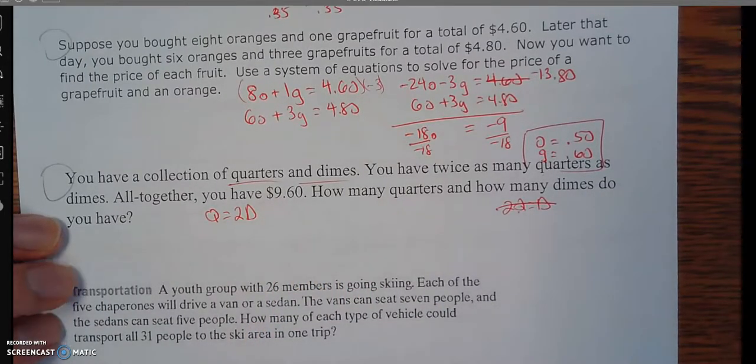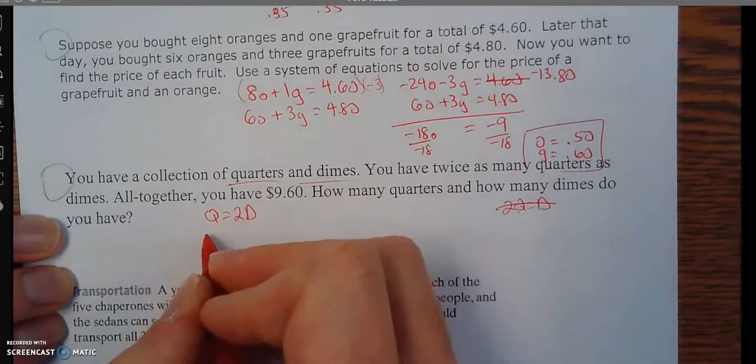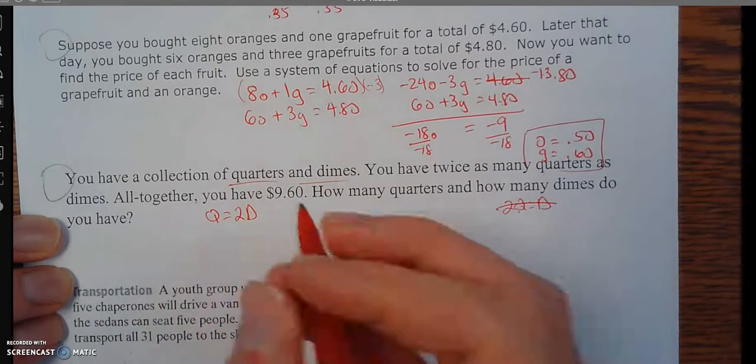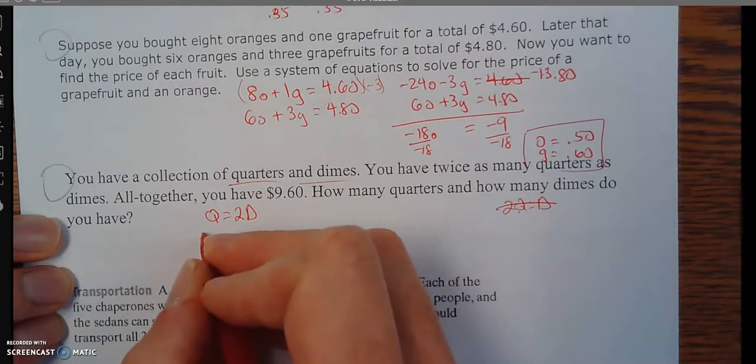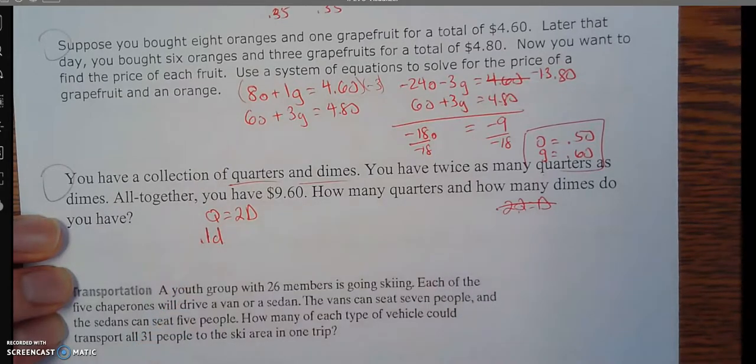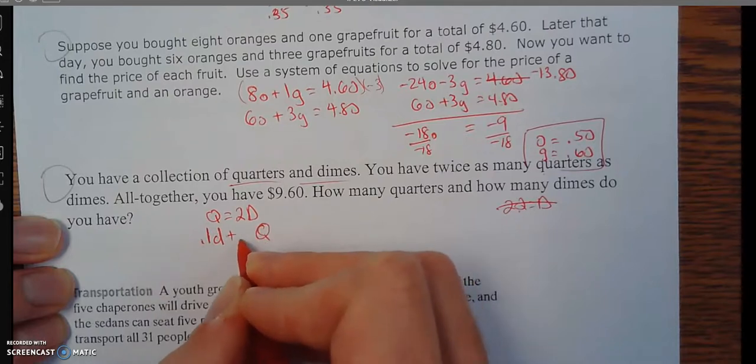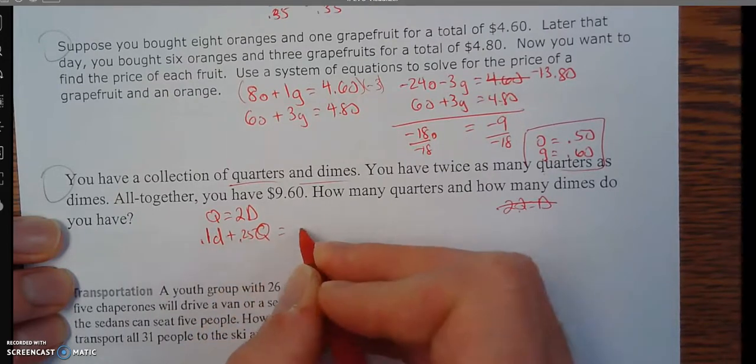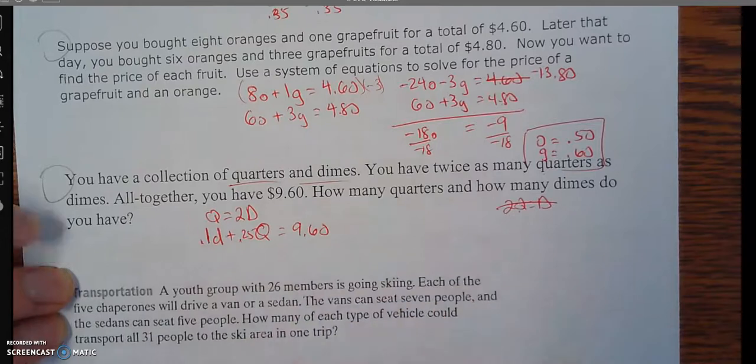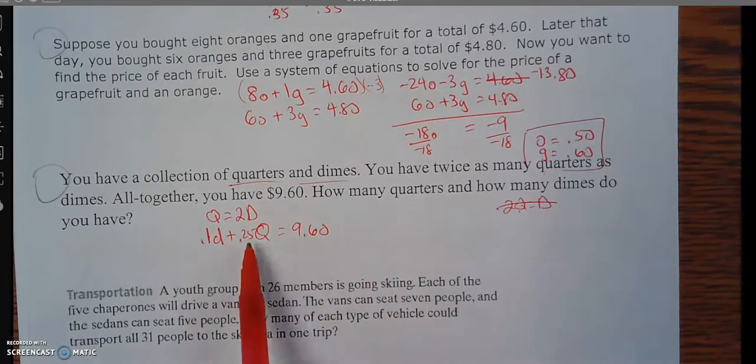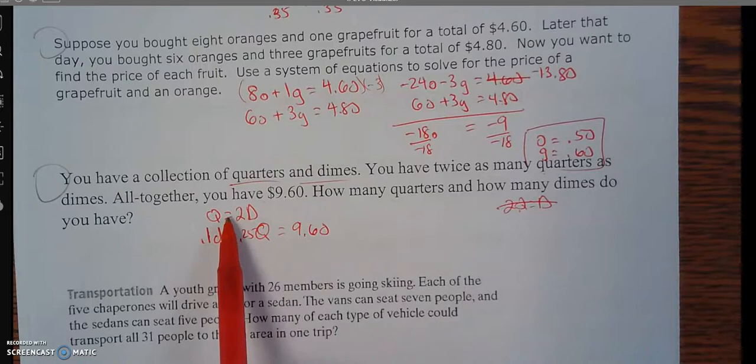The next statement has to do with value. So I have to throw in something about a dime being worth 10 cents and a quarter being worth 25 cents. So altogether, I have $9.60. So if I took the number of quarters times, I'll do dimes first, number of dimes times 0.1 plus the number of quarters times 0.25, then I'll get $9.60. So if I have a value in there, I've got to multiply by their value. Up here, there's nothing about value. It's just them being coins. There's twice as many quarters as dimes.